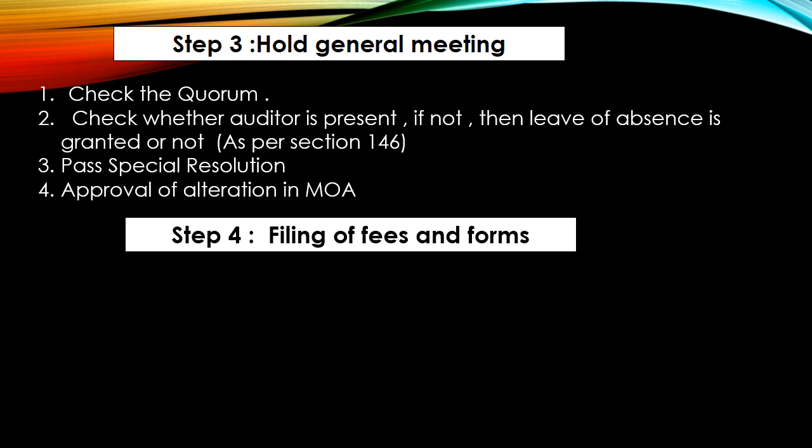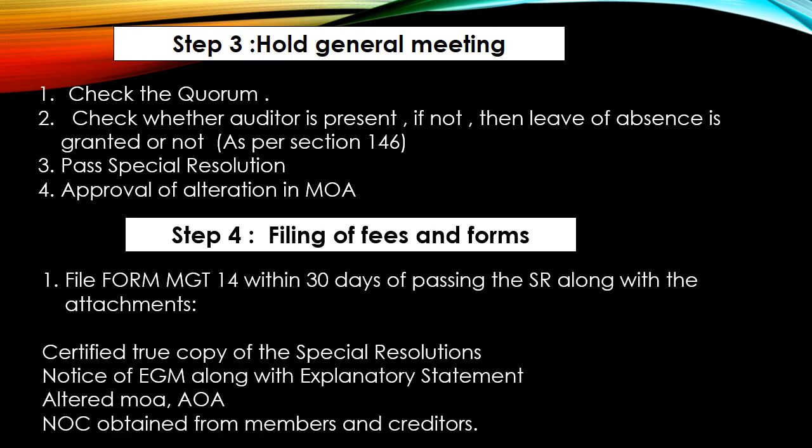Next step is filing of forms. अब आपका special resolution pass हो गया है, general meeting conduct हो चुकी है, तो अब आपको required forms MCA पे file करने होंगे. First form is MGT-14, क्योंकि special resolution pass हुआ है — जभी भी special resolution pass होता है, उसके within 30 days company को MGT-14 file करना होता है, along with the following attachments: copy of special resolution, notice of EGM along with the explanatory statement, altered MOA and AOA, and NOC obtained from the members and the creditors.